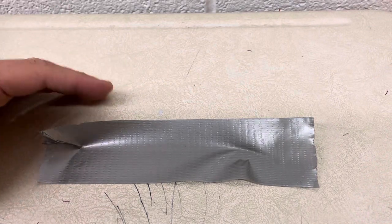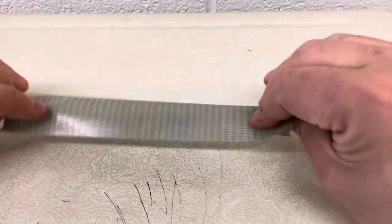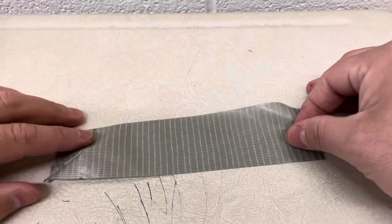So essentially, I'm going to show you how to make a bow out of duct tape. You want a piece like this, probably about six inches long, and you want to flip it upside down so the sticky side is facing up.